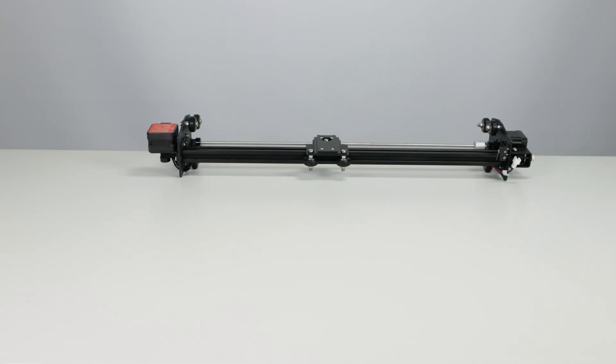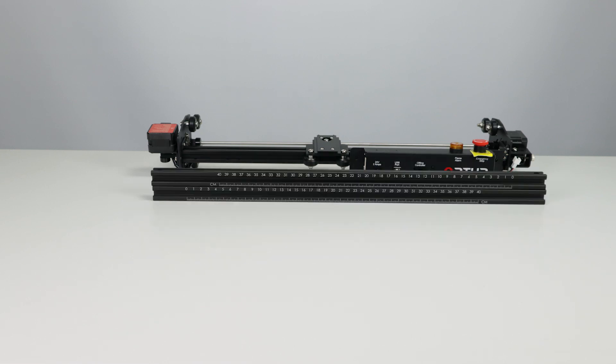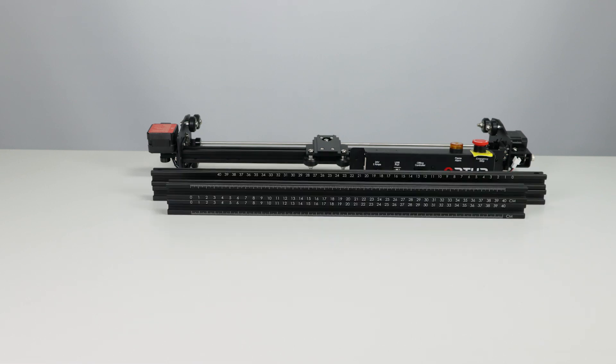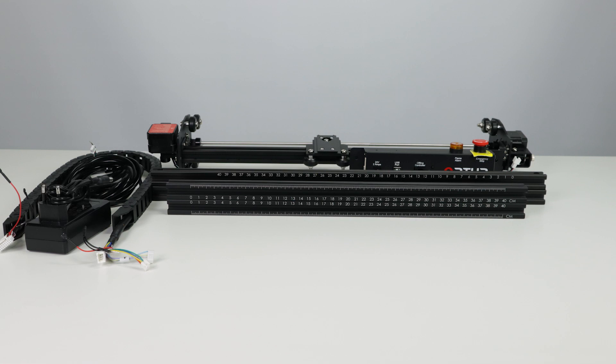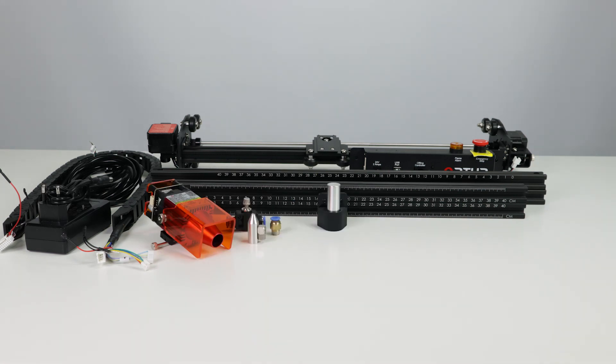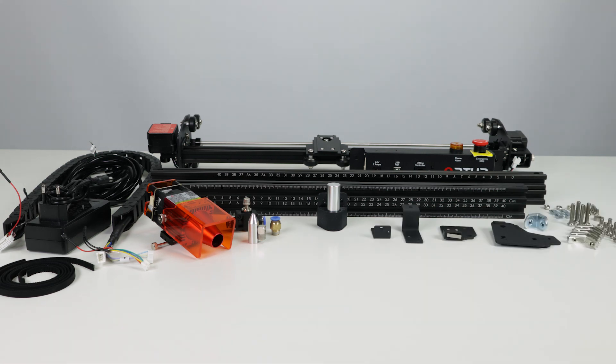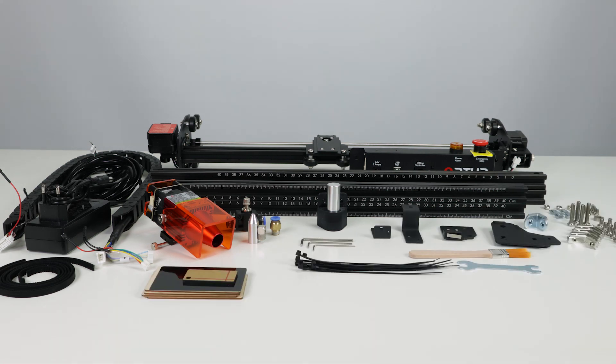In the box, you get the gantry, the controller with a lot of safety features, the X and Y axis, the drag chain already with cables, USB cable, air assist tube, the power supply, the laser, distance gauge, air assist, timing belts, brackets, screws, tools, as well as some test materials.